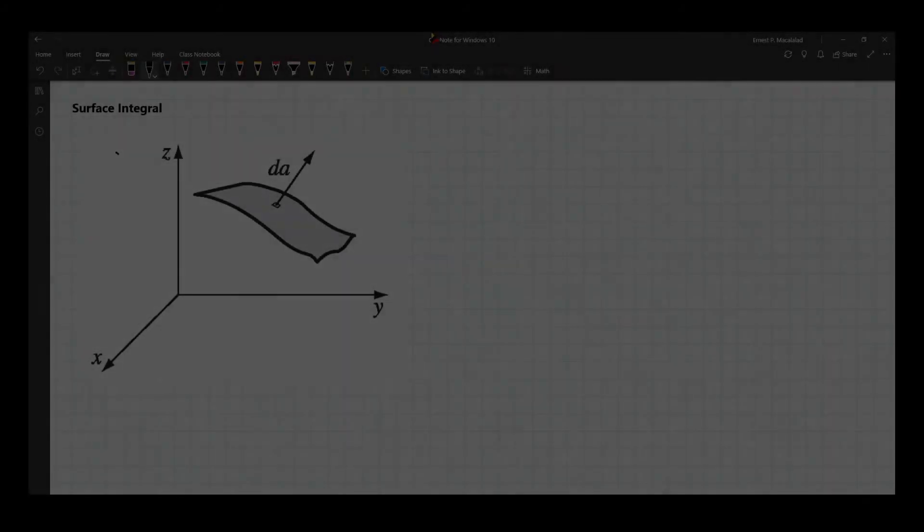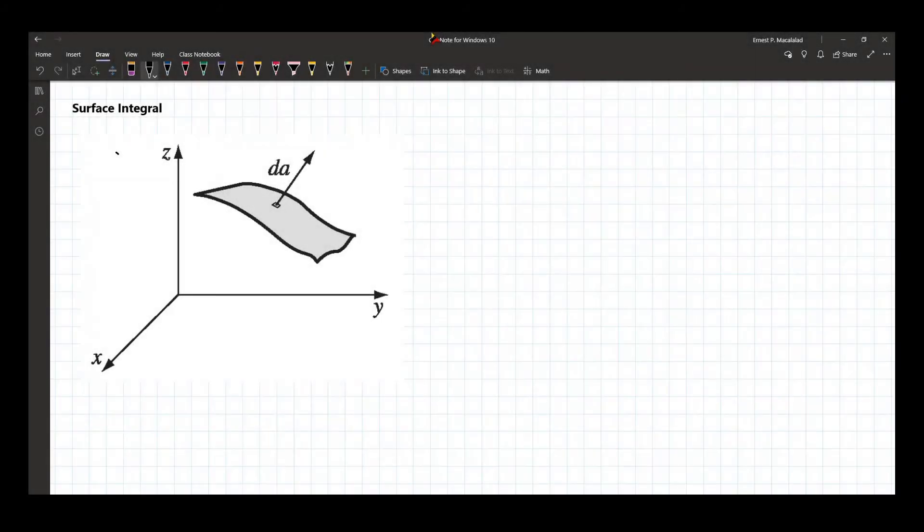Okay, surface integral. So if we have a surface here, just like your line integral, we divide this whole surface into area elements dA. This area element dA is defined by, is dependent on, or the way that we represent dA as well as dL will depend on what the coordinate system we have now.